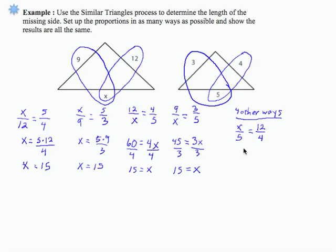And then I could say 5 over x equals 4 over 12. Now, I could also say that x over 5 equals 9 over 3 or 5 over x equals 3 over 9.